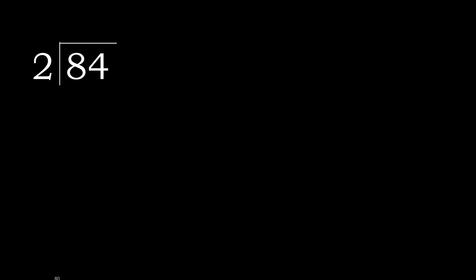84 divided by 2. Starting with 8 — 8 is not less, so we work with 8. 2 multiplied by which number is nearest to 8 but not greater? 2 multiplied by 5 is 10, which is greater. 2 multiplied by 4 is 8, which is not greater. 8 minus 8 is 0.